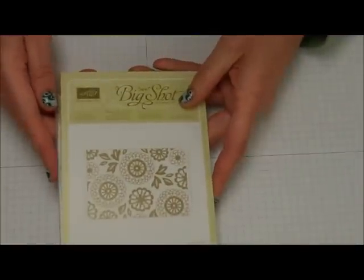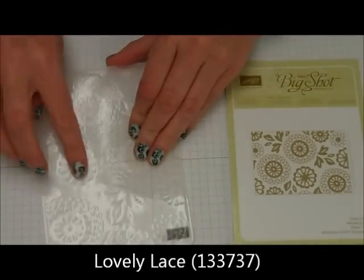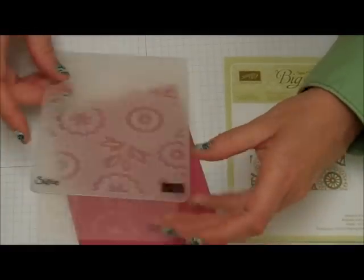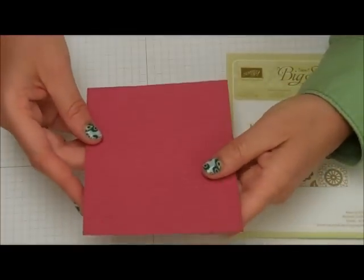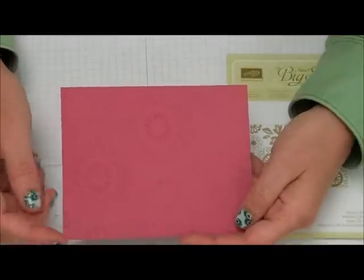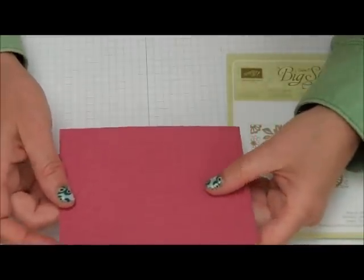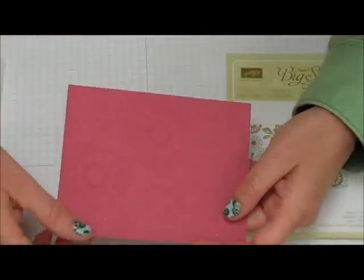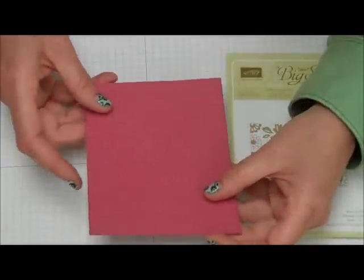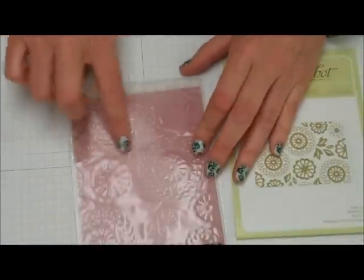The next one is called Lovely Lace, and I really like this one. You can't see it very well here. There's a little bit better, and hopefully you can see this. I think this is going to be the one that when I want a really elegant design, I'll go to Lovely Lace. It's similar to Beautifully Baroque, but I like the flowers on this one, just really fine details. Again, this is Lovely Lace.